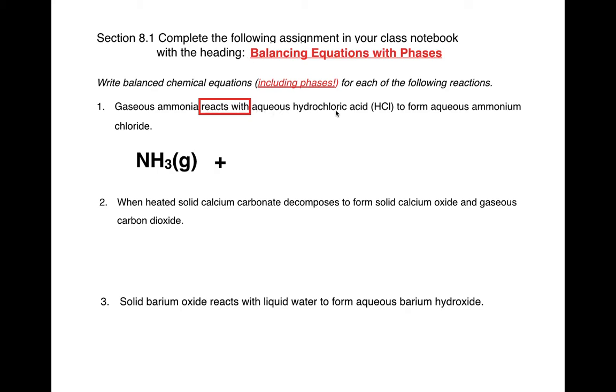Next thing: aqueous hydrochloric acid. We gave you the formula, HCl. What phase is it in? Aqueous, so you'll put aq in parentheses. Just a little fact: acids, anytime you have an acid, it will be aqueous. Next part says to form. These two things react and form something new. So these are the reactants and they're going to turn into your product. That's when you use the arrow.